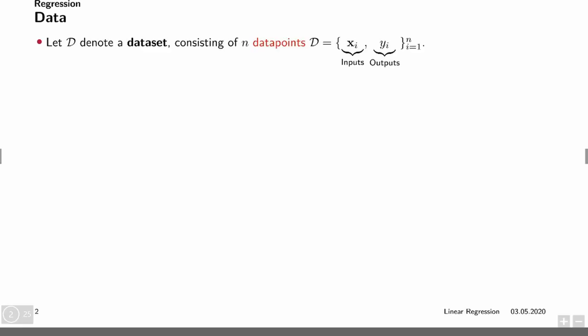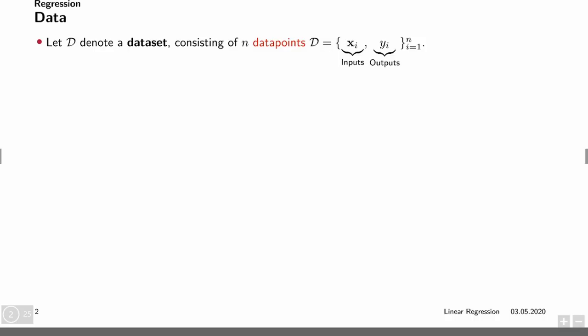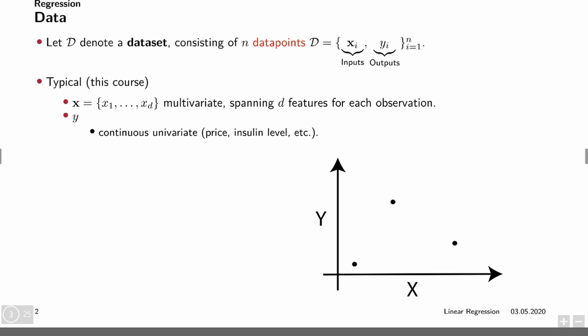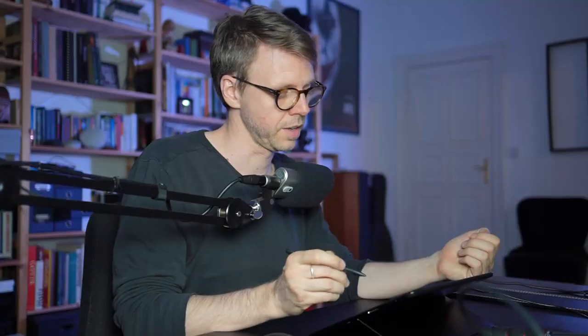So let's quickly review what linear regression is about. In regression, which is a supervised setting, we are given a dataset consisting of n data points that are input-output pairs, where the inputs are typically vectors and the outputs are scalars. So the inputs are vectors of d features and y is a single continuous univariate variable — for example, the price of a flat, the insulin level of a patient, and so on.